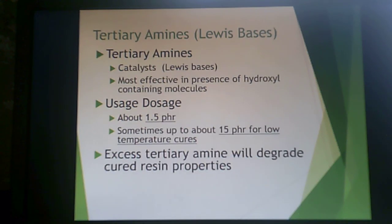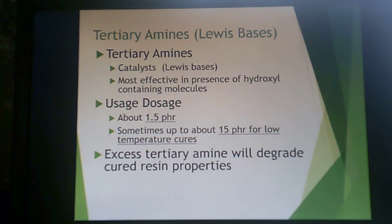You can use tertiary amines, but those are used as catalysts, as shown before, and they're most effective in the presence of hydroxyl-containing molecules. Typically they're used in catalytic amounts of 1.5 parts per 100 resin, sometimes up to 15 parts per 100 resin for low-temperature cures. However, too high an amount of tertiary amines will likely degrade the cured resin properties.